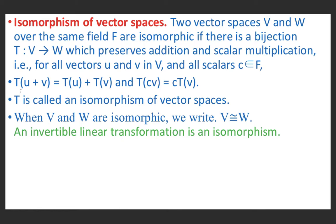We know that if T(u + v) = T(u) + T(v) and T(cv) = cT(v), then T is a linear transformation. So a linear transformation which is a bijection — meaning which is one-one and onto — is called an isomorphism.